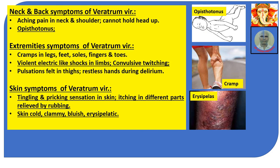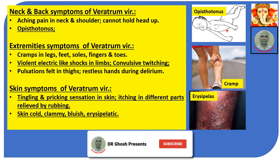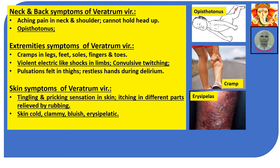Neck and back symptoms of Veratrum Viride: aching pain in neck and shoulder, cannot hold head up. Opisthotonus — a spasmodic condition where the body is bent backward, so that if the patient lies on his back, only the head and heel touch the ground.